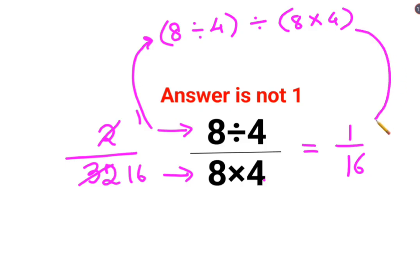When you do it this way also the answer will come what? 1 upon 16. I hope this is very very clear to everyone.